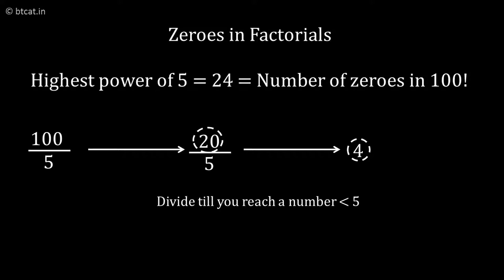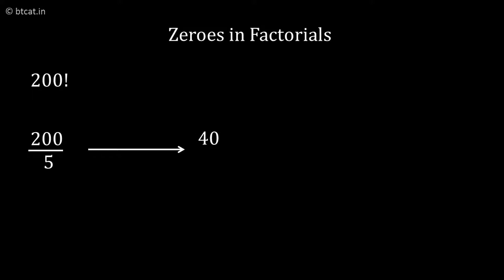And we will get the answer. So 20 plus 4 will become 24. Therefore, we can say there are 24 zeros in 100 factorial, or rather if 100 factorial is written as a big number and someone counts the zeros at the end, there will be 24 of them.